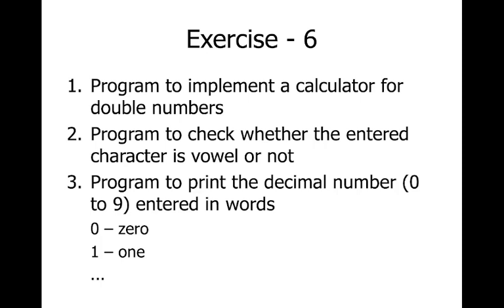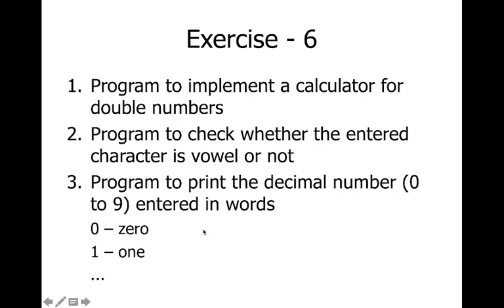Here is a small exercise. First, implement a calculator for double numbers — we have already seen the integer version; now make it for double. Second, check whether an entered character is a vowel or not — we have already seen that program, you can try it. Third, print the decimal number 0 to 9 entered in words: if the user enters 2, print 'two'; if 5, print 'five'. Try these three programs.